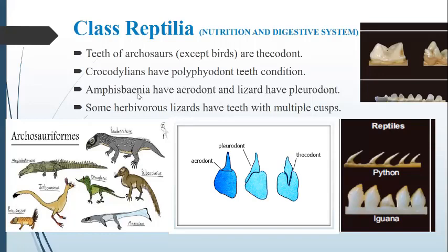Amphisbaenia have acrodont teeth. On the other hand, lizards have pleurodont teeth. You can see here that pleurodont teeth have a base which starts from the middle of the jaw socket — the base of the pleurodont teeth starts from the middle of the socket. These type of teeth are called pleurodont teeth.